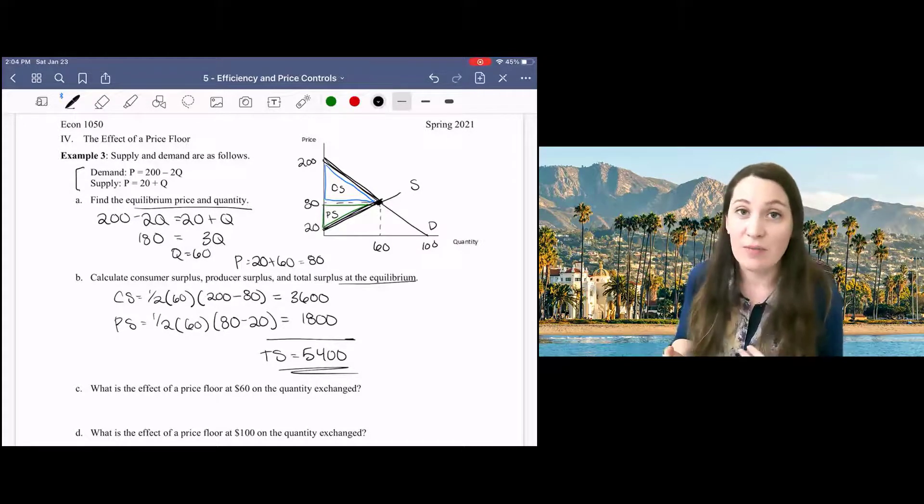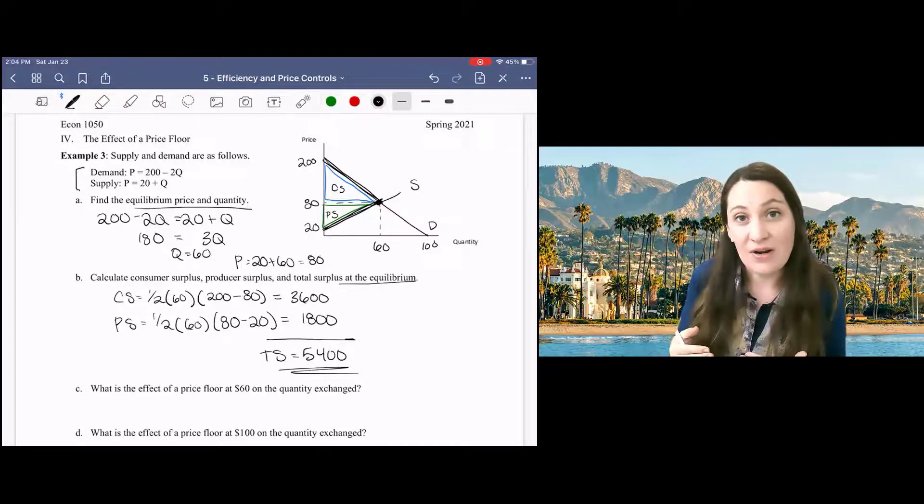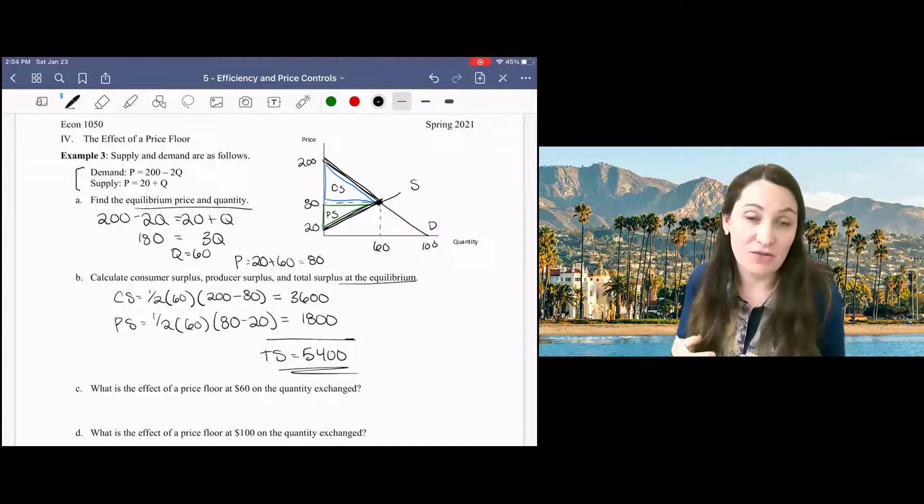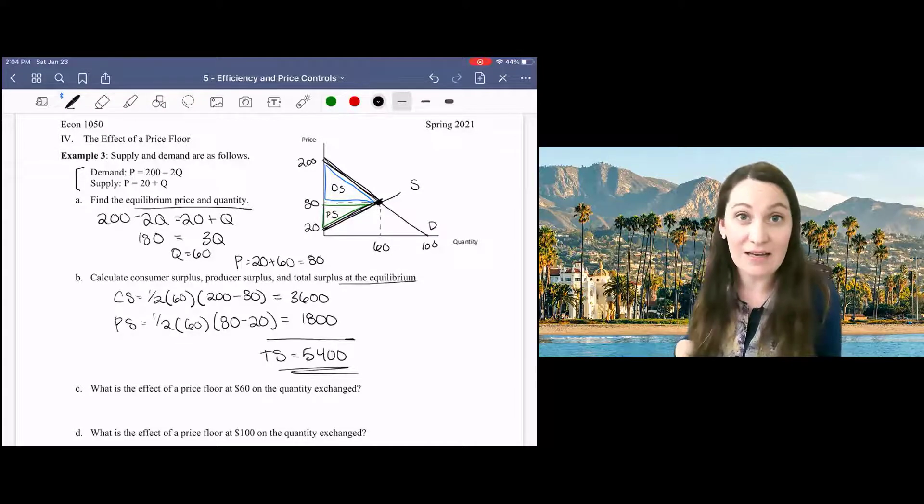That's because, remember, a price floor is a minimum allowable price, meaning that the price in this market is not allowed to drop below 60. But that won't constrain our market equilibrium in this case as the market equilibrium price is 80.